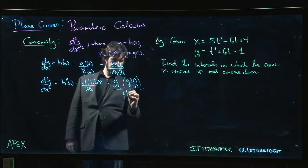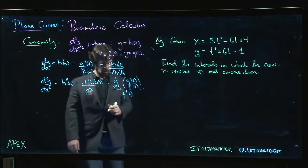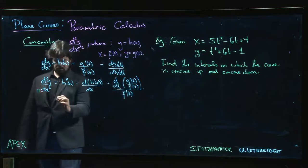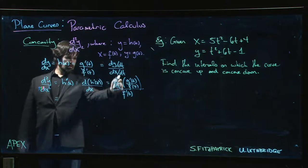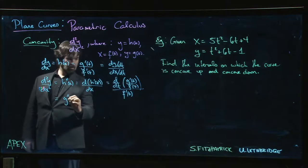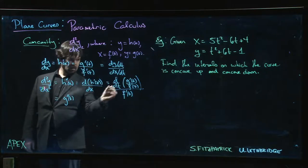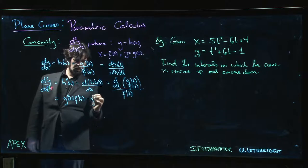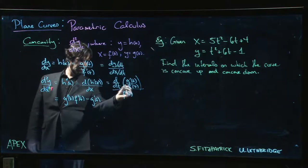That's just quotient rule, right? So derivative of the top, g double prime, times the bottom, f prime, minus the top times the derivative of the bottom.